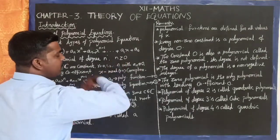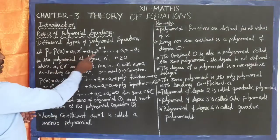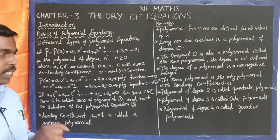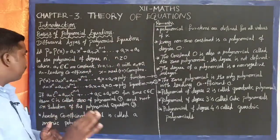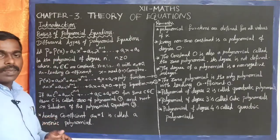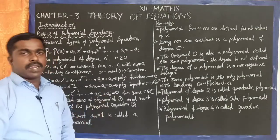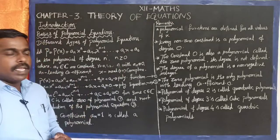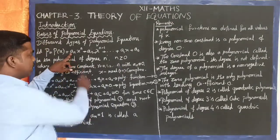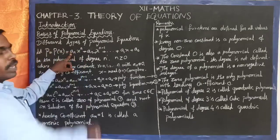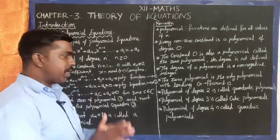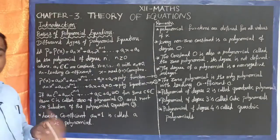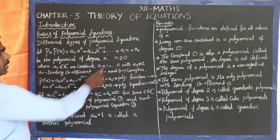The exponents go 0, 1, 2, 3, etc. The coefficients a₀, a₁, ..., aₙ₋₁, aₙ can be complex numbers, real numbers, integers, or rational numbers. The leading coefficient aₙ corresponds to the highest degree term. The variable x is not equal to 0, and x can be a real or complex number.